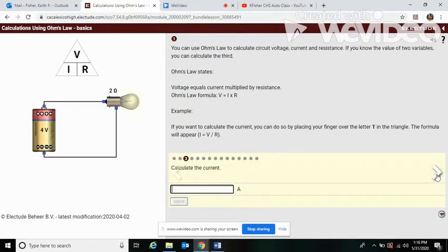Calculate the current. So the current again is I. If we cover up I, it's volts over resistance. So we have 4 volts and 2 ohms of resistance. Four divided by two is two. That's pretty simple math.